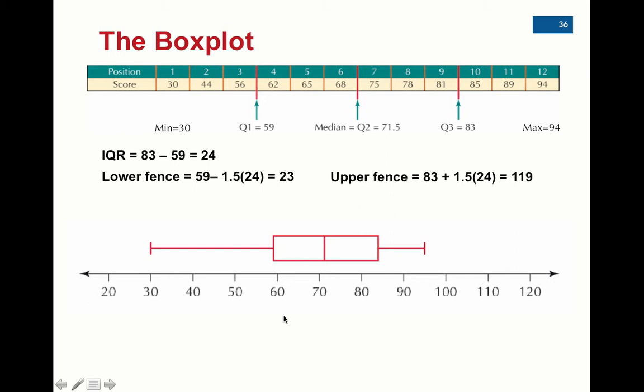But one thing's for sure, every box plot, no matter if the data set has outliers or not, the left edge of the box will be Q1, the line through the middle of the box will be the median, and the right edge of the box will be Q3. It's just a matter of where these whiskers go to.